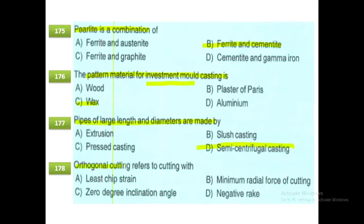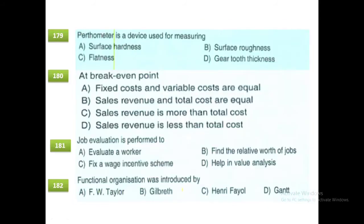Orthogonal cutting refers to cutting with a 0-degree inclination angle. A perthometer is a device used for measuring surface roughness. At the break-even point, fixed cost and variable cost are equal. Job evaluation is performed to find the relative worth of jobs.